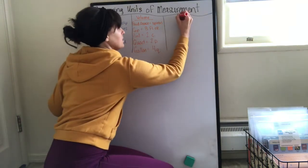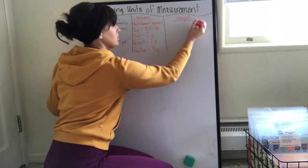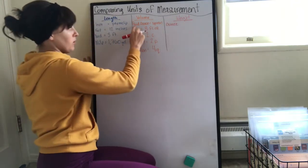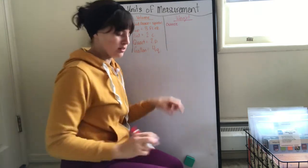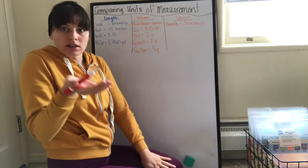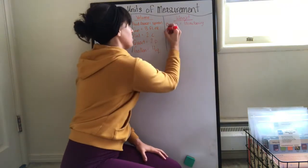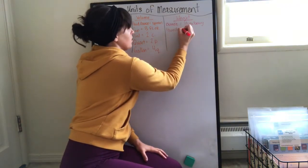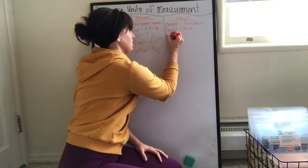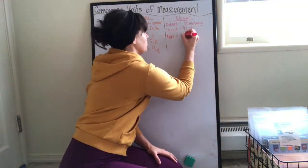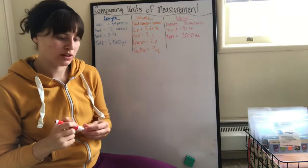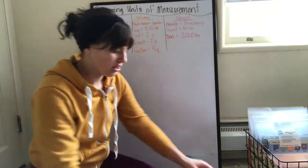Then we're going to do weight or mass. Here we had ounce, which is why we write fluid ounce for liquid. Here we just write ounce, and that was about a strawberry. Then pound equals sixteen ounces. Then we had a ton, which was like a small car, which equals two thousand pounds. This is just going to be here as our key, as our guide.